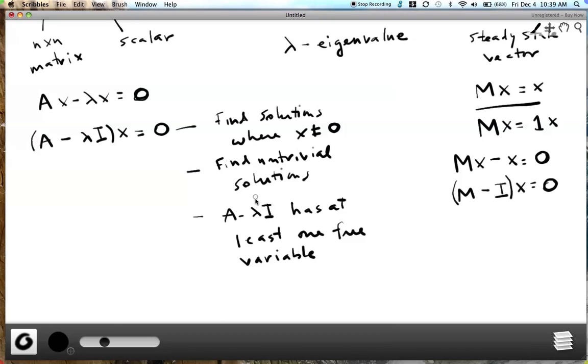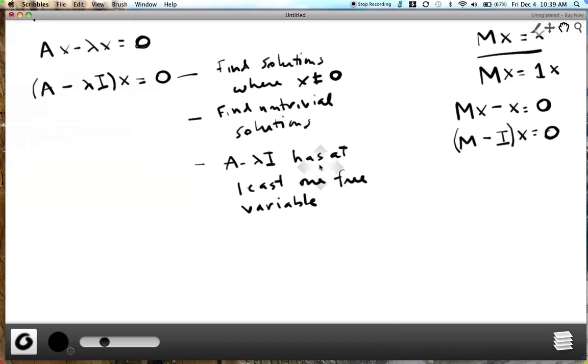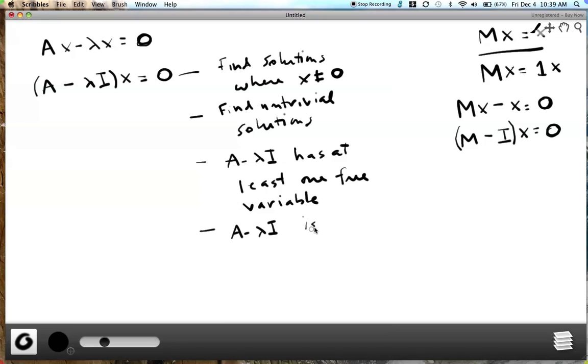So then let's think, when does this matrix have at least one free variable? Well, that would mean that it is not invertible, right? It means that A minus lambda I is not invertible, from the invertible matrix theorem. And one way to get your handle on a matrix that's not invertible is to look at its determinant. We know that the determinant of A minus lambda I has to equal zero, because if it's not invertible, that means its determinant equals zero. So if the determinant of A minus lambda I equals zero, then that means it's not invertible, which means that it has at least one free variable, which means the system will have non-trivial solutions.